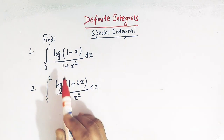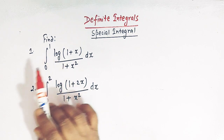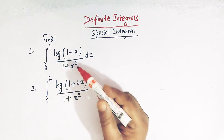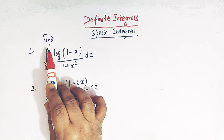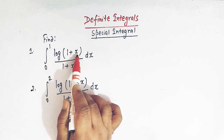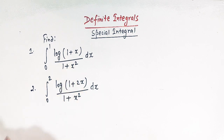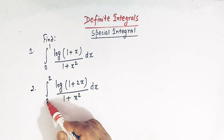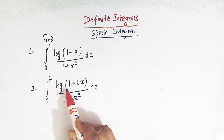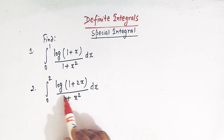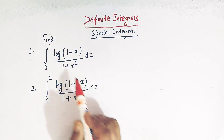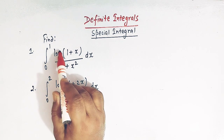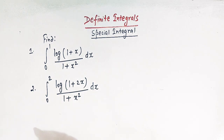So now here we have two integrals. Let us take a close look at these two integrals. In the first integral we have 0 to 1 of log(1 + x) divided by 1 + x squared. And in the second integral we have 0 to 2 of log(1 + 2x) divided by 1 + x squared dx. The log involved here is the natural log.